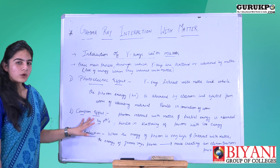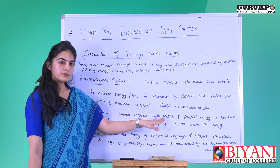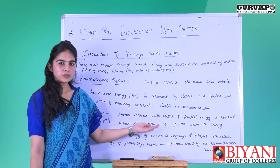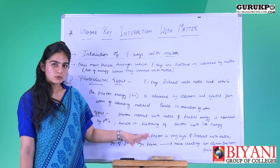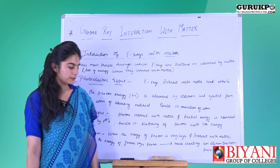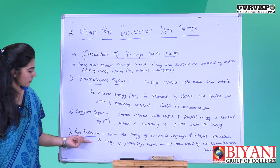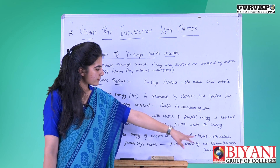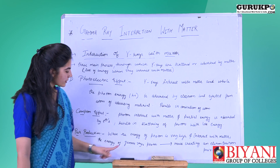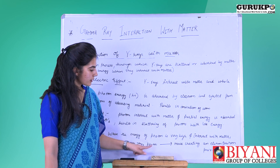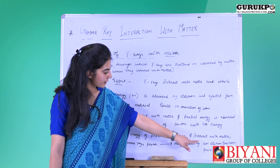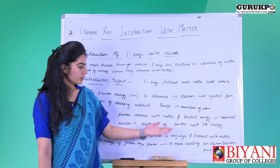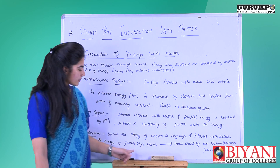The second is the Compton effect. In this process, a photon interacts with matter and partial energy is absorbed by an electron, resulting in scattering of the photon with less energy. The third is pair production. When the energy of the photon is very high and it interacts with matter, the energy of the gamma ray photon is converted to mass, creating an electron-positron pair.